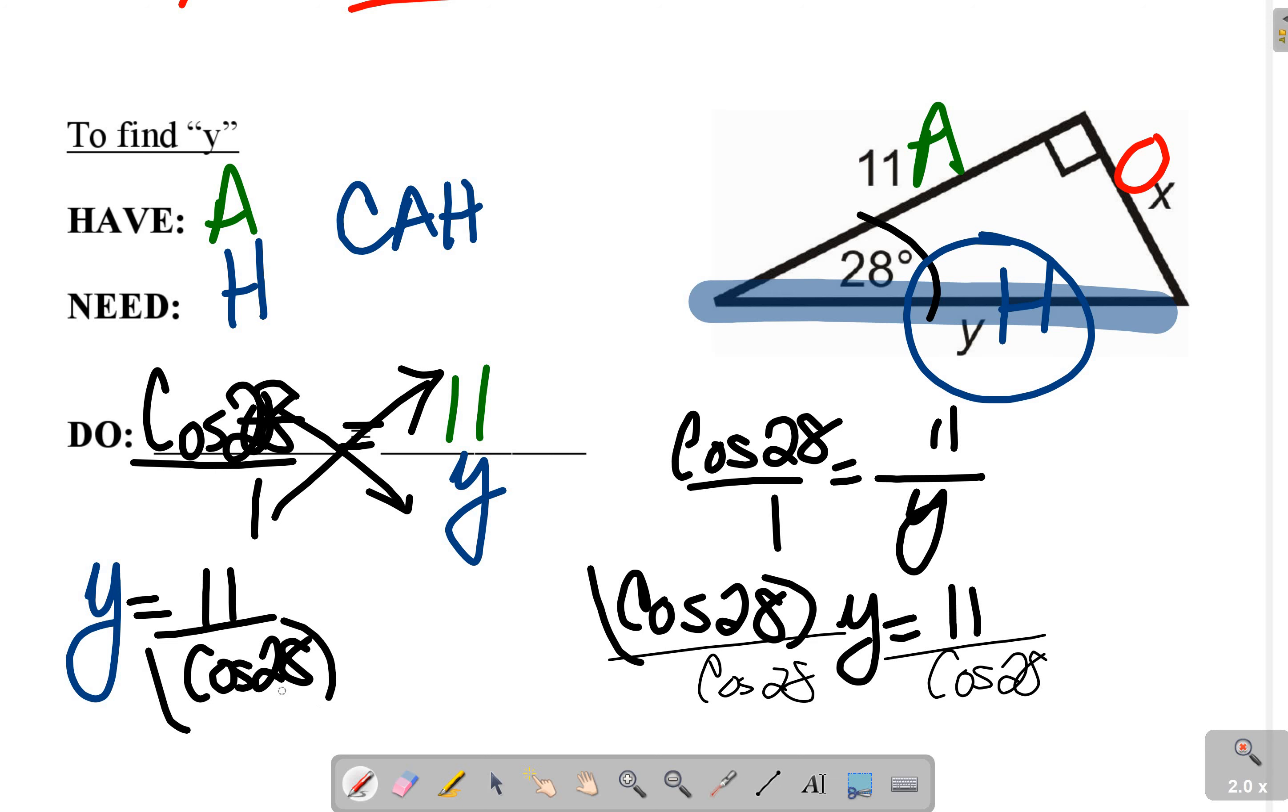So in your calculators, you start with 11, and then you divide by the cosine of 28. And you should be getting approximately, second decimal, 12.46.